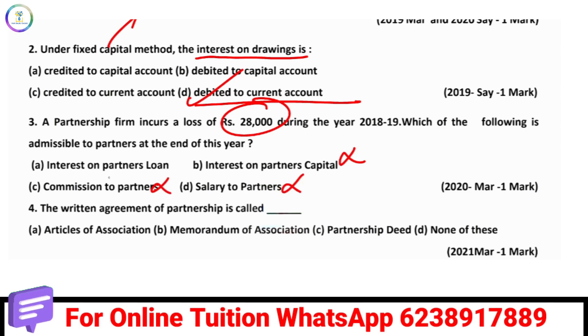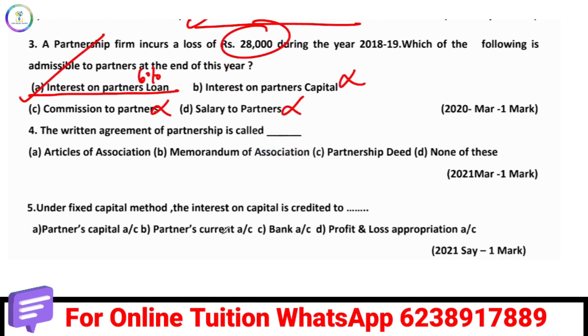In the absence of a partnership deed, the interest on loan is charged at 6%. This is based on the written agreement of the partnership deed.